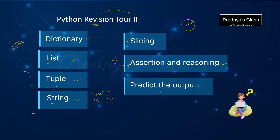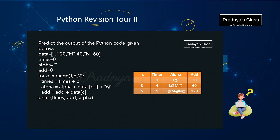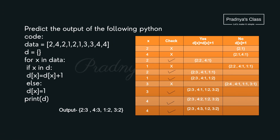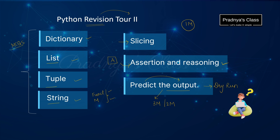Generally you will be getting a question in the form of predict the output, which will be for three marks or it can be even for two marks. We have solved a lot of questions of this type using dry run table, that's why I trust you that you can guess the output easily. The weightage of the questions may slightly change in the final board paper but we will not worry about that. We will be focusing on solving the questions. The question based on slicing you may get even for two marks instead of one.